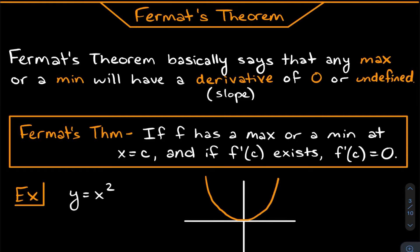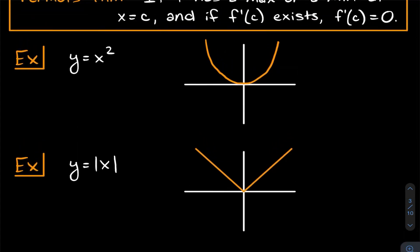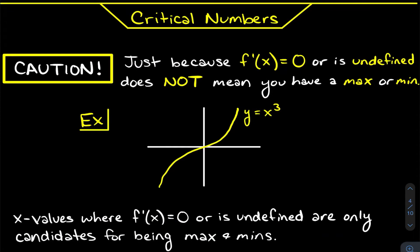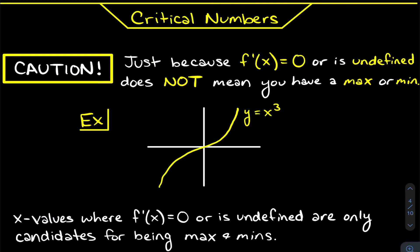The slope can also be undefined, like with y = |x|, which has a corner that's not differentiable. Then we run into critical numbers. Every max or min has a derivative of zero or undefined, but the converse is not true — a point with derivative zero or undefined is called a critical number, and it could possibly be a max or min, but doesn't have to be. A great example is y = x³, where at x = 0 the tangent line is horizontal, but it's not a max or min.